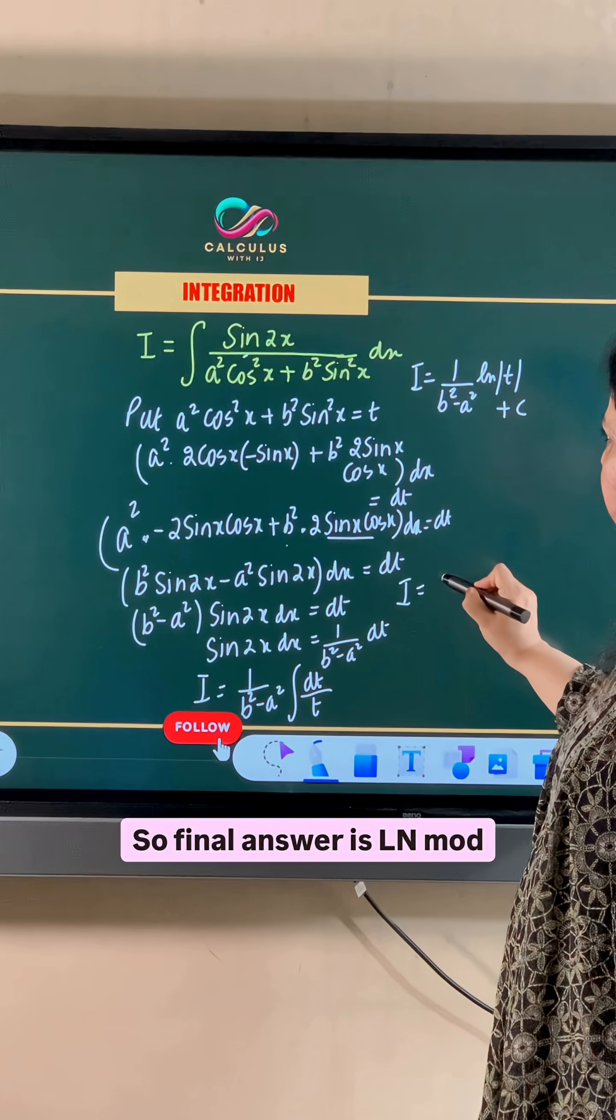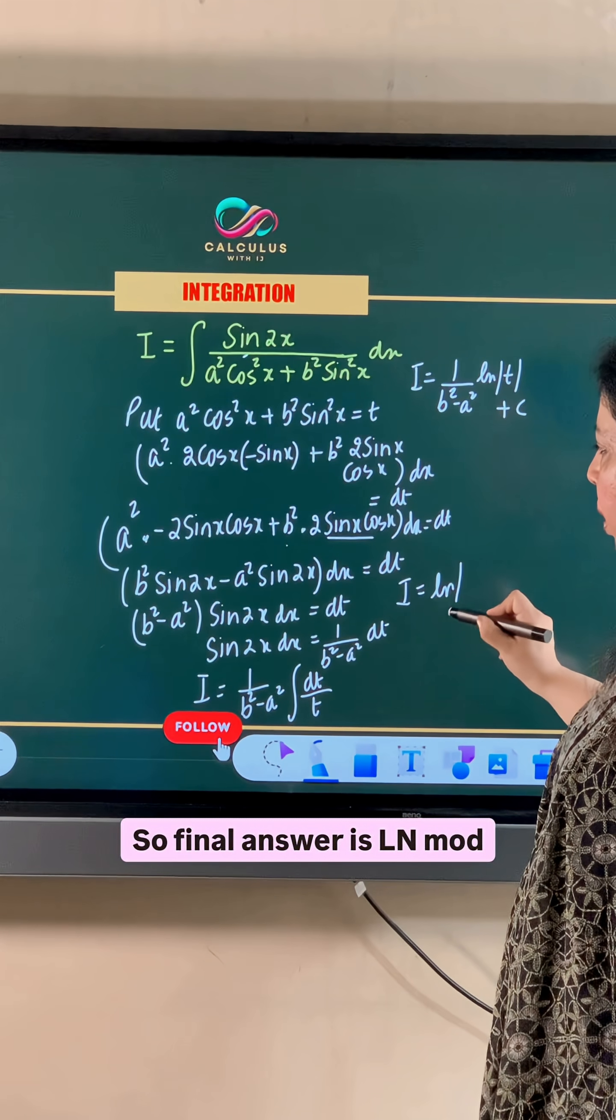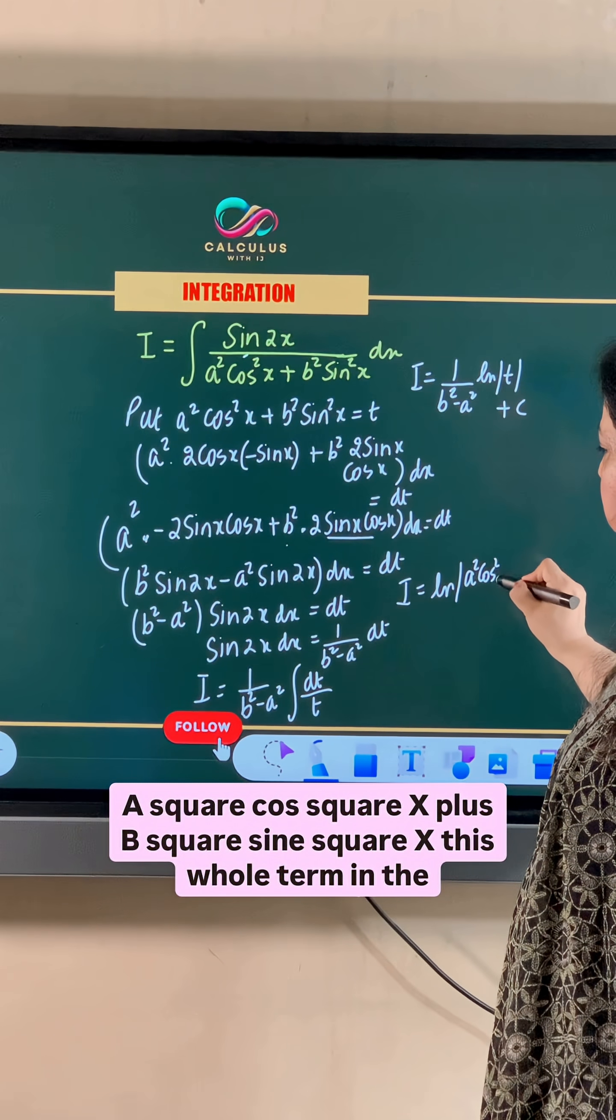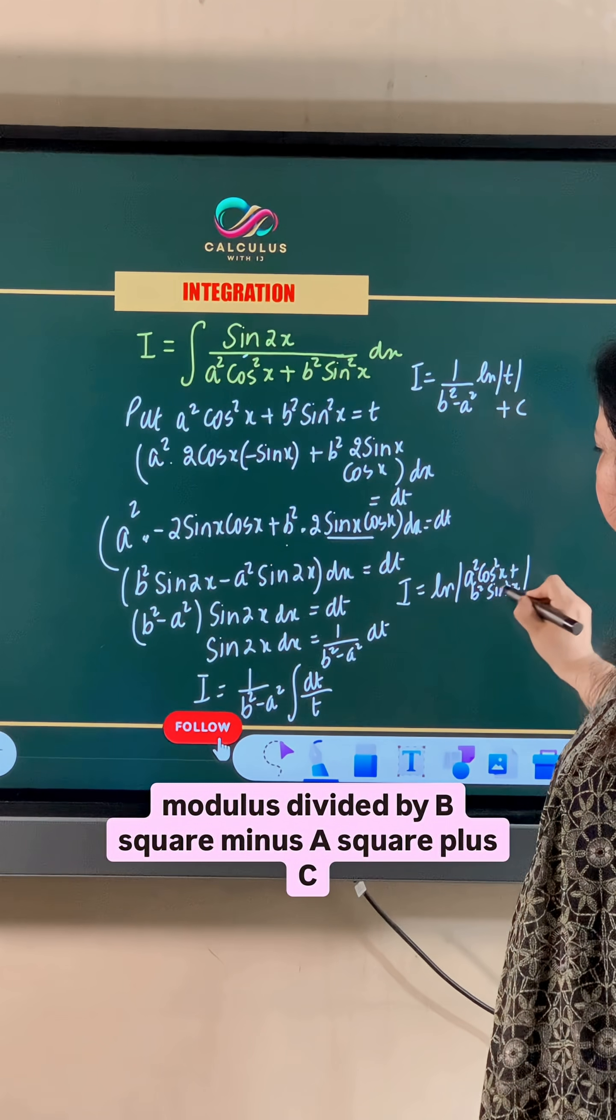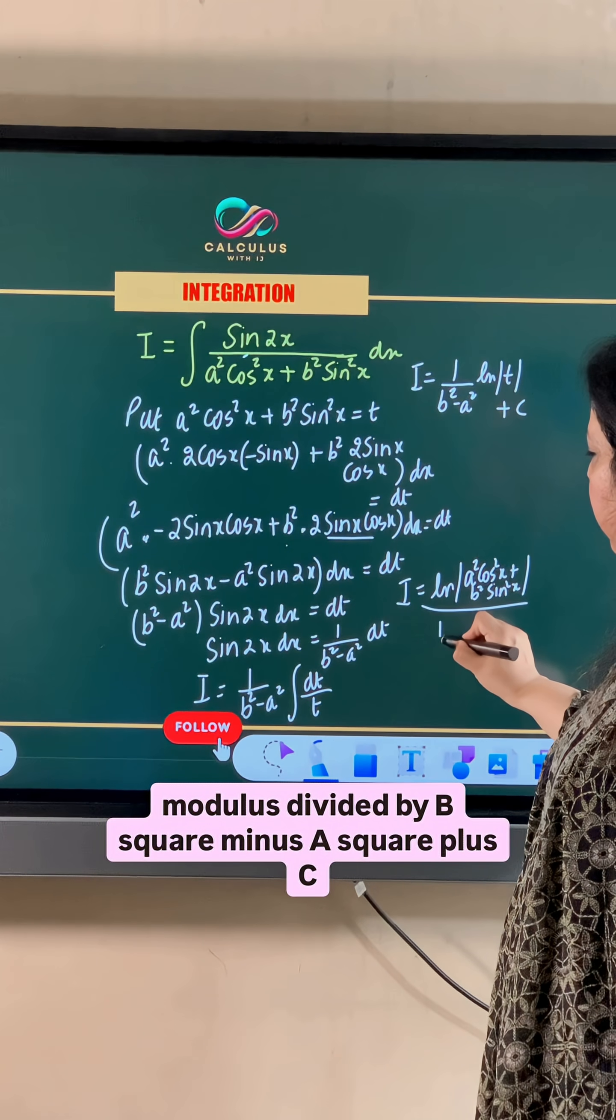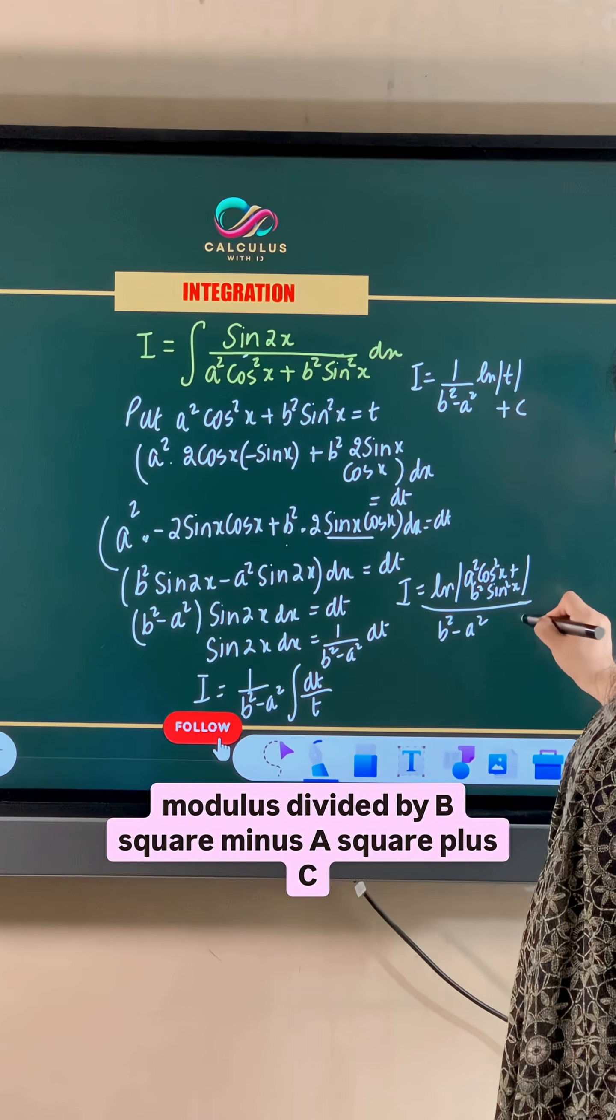So final answer is ln mod a square cos square x plus b square sin square x, this whole term in the modulus divided by b square minus a square plus c.